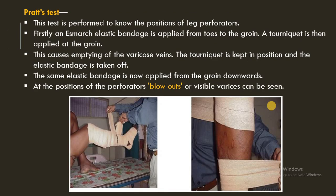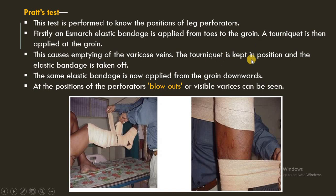Next is Pratt's test, performed to identify the position of leg perforators. First, an elastic bandage is applied from the toes to the groin, and a tourniquet is applied at the groin. This empties the varicose veins. The tourniquet is kept in position while the elastic bandage is removed. The same elastic bandage is then re-applied from the groin downward. At the position of the perforators, blowouts or visible varices can be seen during this procedure. This is known as Pratt's test.